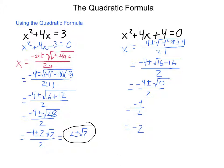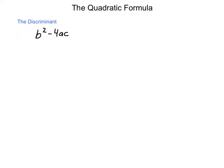This equation simplifies down to a single value. Knowing when we have a single value, multiple values, or no solutions at all depends on one part of the quadratic formula called the discriminant. In the quadratic formula, the part inside of the square root — b squared minus 4ac — is what is called the discriminant.